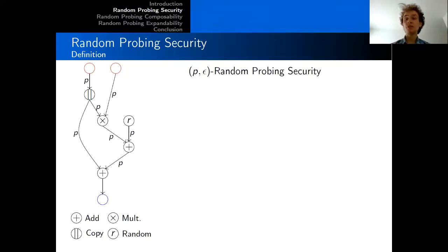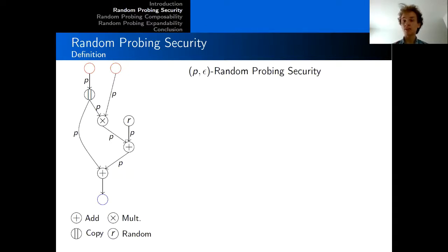For our definitions, we consider circuits that are directed graphs, as you can see on the example on the left, whose edges are the variables that we call wires, and that leak each with probability p, and whose vertices are the operation gates. We can have multiplication gates, random gates that generate random values, and copy gates that output two fresh copies of an input variable. In our model, we don't consider leakage on output wires, since when composing several circuits, the output wires of a circuit are just the input wires in the next circuit.